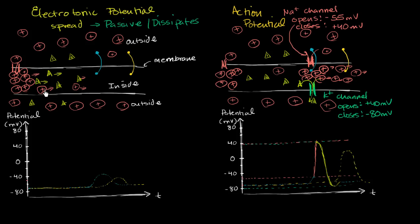You could view this as the boosting of the signal: the signal spreads via electrotonic spread, then you trigger a voltage-gated channel, and that boosts the signal again. And if you had another voltage-gated channel further along, it would boost it again. The neuron uses a combination of these mechanisms — spreading passively and then boosting — so that the signal can cover long distances.